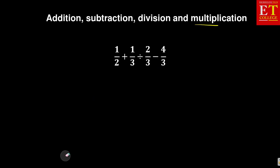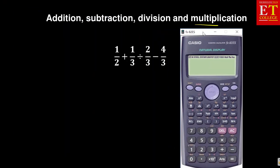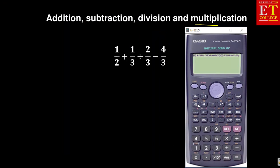The first thing is, let us use our calculator so that we can see what is the answer and then we can work from there. So with our calculator, we're given 1 over 2 plus 1 over 3 and then divide it by 2 over 3 minus 4 over 3.